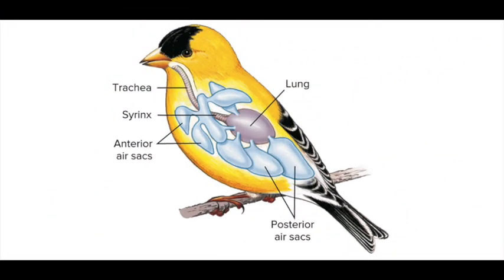Next we're going to show the bird respiratory system in the quail. The first important thing to know is that birds have unidirectional airflow — a crucial adaptation for flight, because birds have very small lungs that can't inflate since they don't have a diaphragm or pleural cavity. Gas exchange occurs between the air capillaries and blood capillaries, and birds are able to utilize almost a hundred percent of the air.